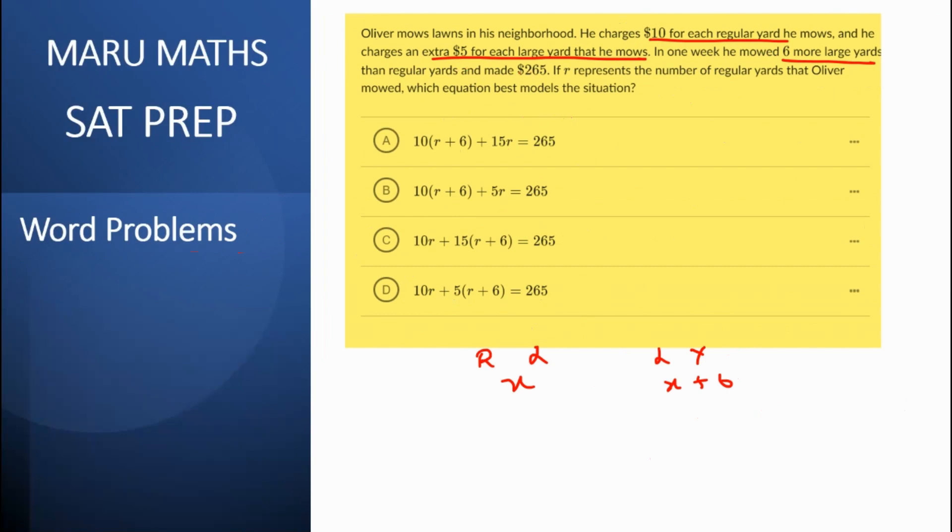And totally he is making $625. So he takes 10 for regular. So this would be 10x plus he takes five extra. So 15 times x plus six should be equal to 625. So which option is this if r is the number of regular yards? So instead of x, they have taken r. So it should be 10r plus 15 times six plus r. So this should be 10r plus 15 times six plus r should be equal to 625. So this should be your answer.